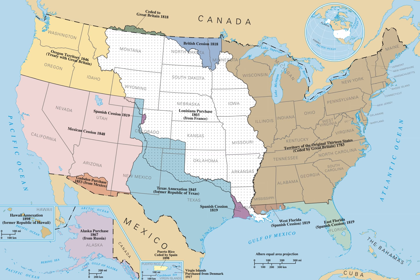New England is a region of the United States located in the northeastern corner of the country, bounded by the Atlantic Ocean, Canada, and the state of New York, consisting of the modern states of Maine, New Hampshire, Vermont, Massachusetts, Rhode Island, and Connecticut. In one of the earliest English settlements in the New World, English pilgrims from Europe first settled in New England in 1620, in the colony of Plymouth.